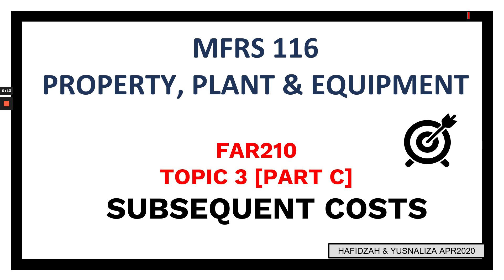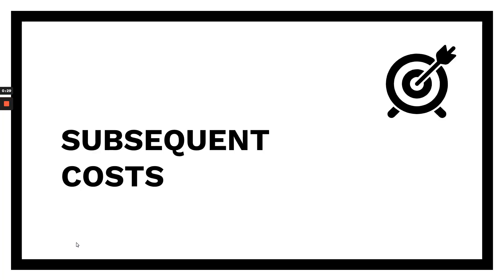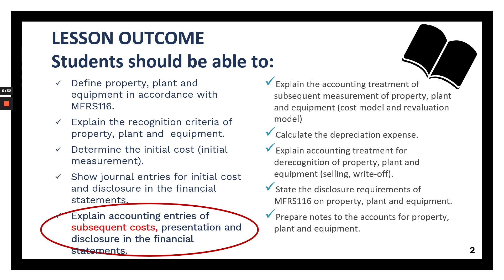We are already in Part C of the presentation and this is the fifth video. In this fifth session, I'm going to discuss subsequent cost under Property, Plant and Equipment. The lesson outcome for today's session is to explain accounting entries for subsequent cost, and the presentation and disclosure in the financial statement.